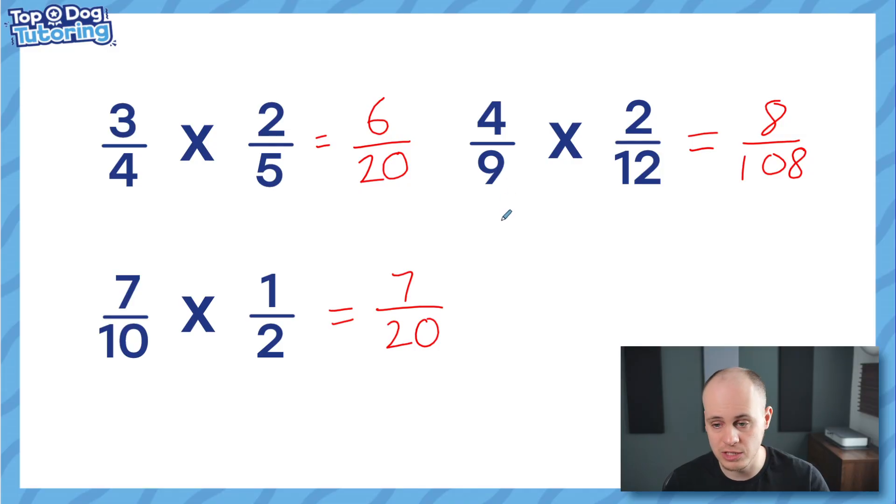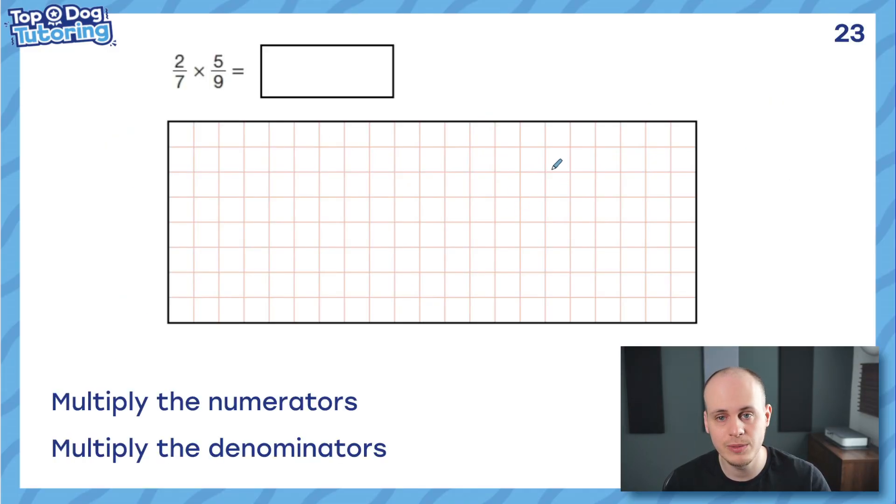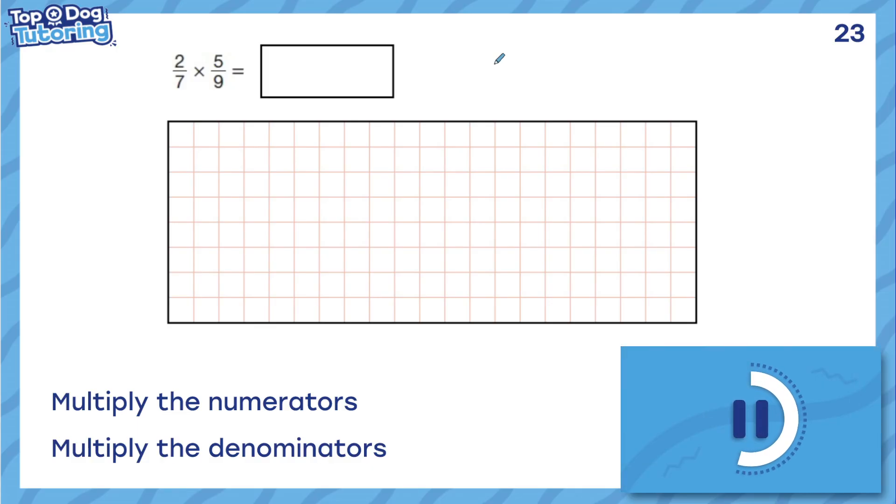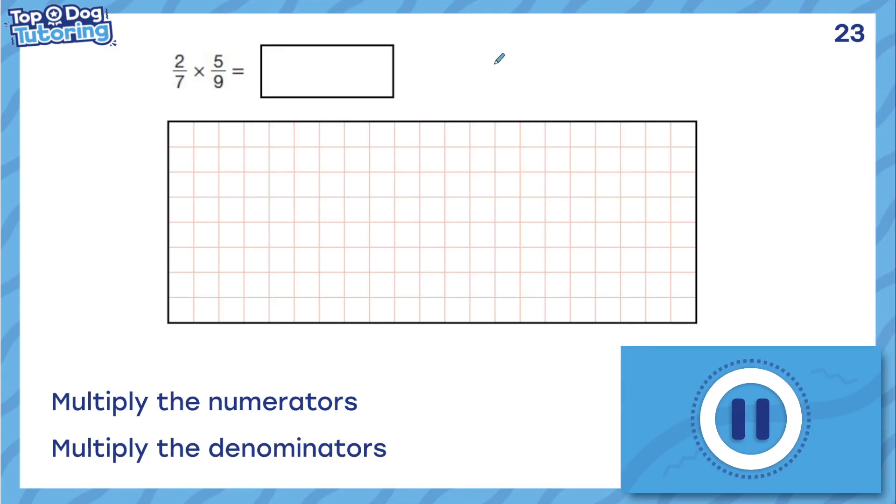Let's have a look at just two questions from the actual SATs. So this one was from the 2023 arithmetic paper and I want you to solve it. Pause the video. Come back when you've done the answer. So using my rule of multiply the numerators, I'm going to get 10 as a numerator and multiply the denominators. Seven times nine is 63. And that's it. That would get you one mark done. You can move on. How cool is that?